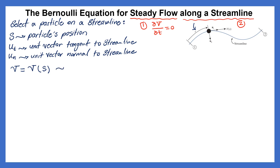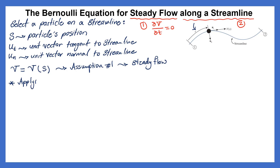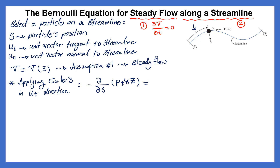Velocity only changes with distance or space (s) and does not change with time, because assumption number one says we have steady flow. Now, we are going to use Euler's equation to derive Bernoulli equation. Applying Euler's equation in the tangential direction: there is a negative sign, and we have the changes of piezometric pressure over direction s, equal to rho times acceleration in the direction of uT.